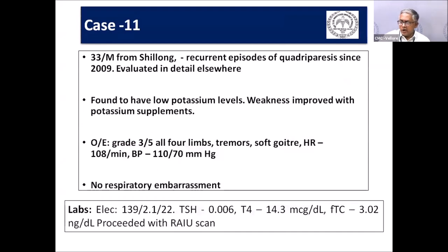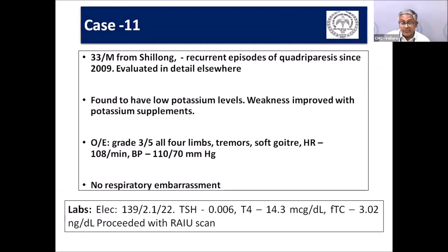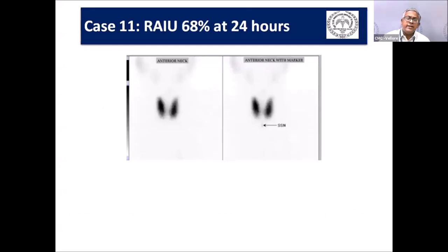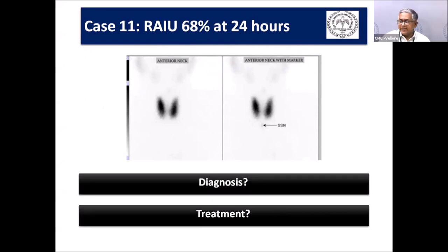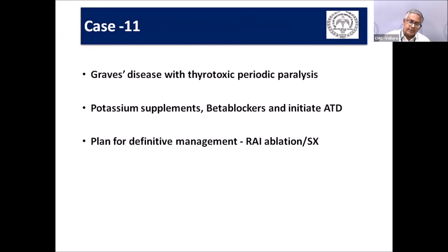Case: An 18-year-old boy from Northeast India with recurrent quadriparesis and profound hypokalemia — potassium supplementation led to improvement. He had tachycardia, soft goiter, and hyperthyroidism. Uptake scan showed increased uptake consistent with Graves disease. Complete diagnosis: thyrotoxic periodic paralysis — commonly seen in Northeast populations. Management includes potassium supplements, beta-blocker, antithyroid drugs, and definitive treatment. Radioiodine ablation is the first-line definitive treatment; if the gland is large, surgery may be needed. After treatment, the episodes resolve.